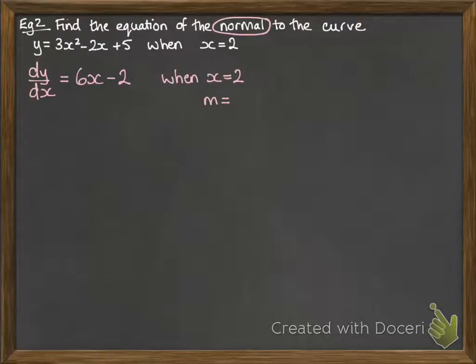The gradient m would be minus 1 over 6x minus 2, because we're doing the normal. It's the negative reciprocal of what it usually would be. Instead of being 6x minus 2, it's minus 1 over 6x minus 2. Then we substitute in the 2 for x and we get minus a tenth.